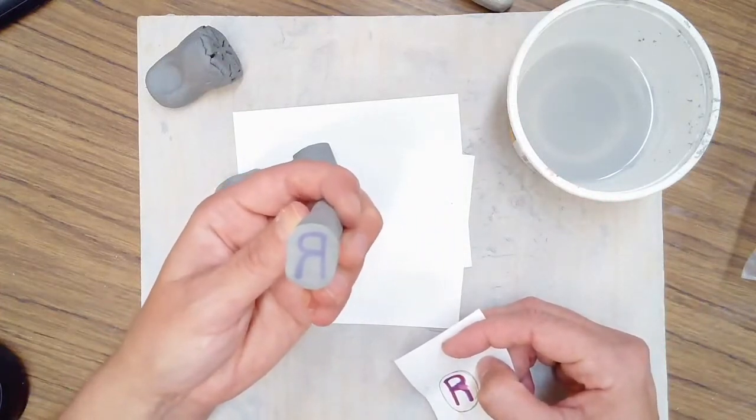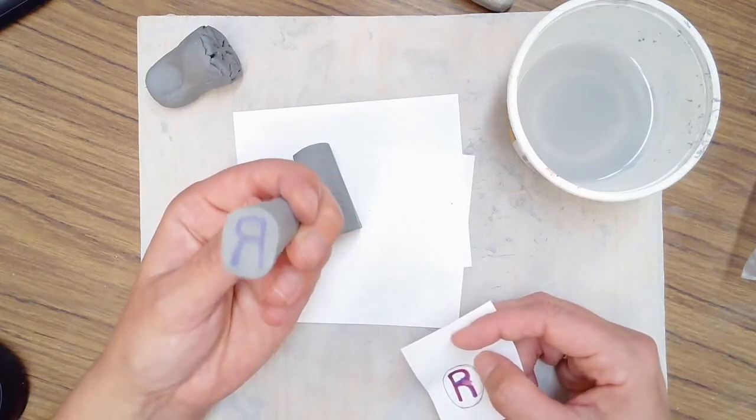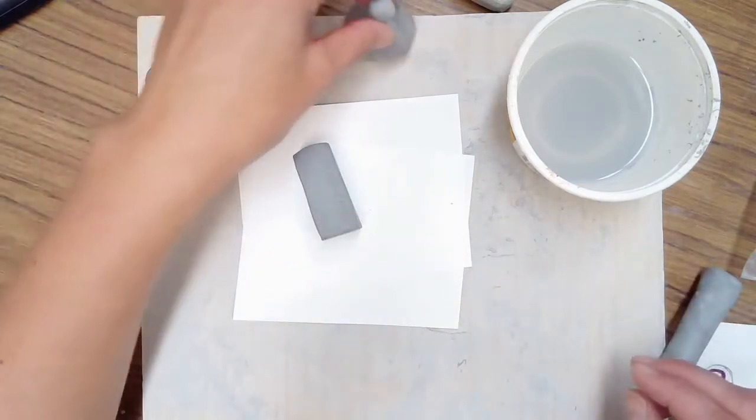And you can use this technique for any shape or design that you want to as well in case you don't want to just go in and start carving on your stamp. So I have a piece of clay here that I'm going to make into a stamp.